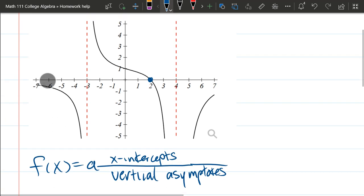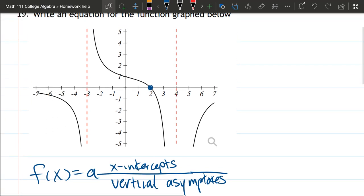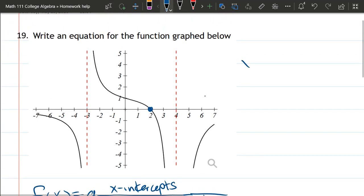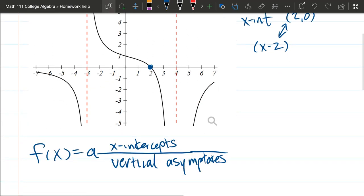Alright, so let's go ahead and get started here. Our x-intercept, we'll start with that. It's the first thing I wrote. The x-intercept, if I write as a point, is (2, 0). Now this is going to correspond to the factor x-2. And that's the only x-intercept, so we're going to go ahead and drop it right in there for x-intercepts.